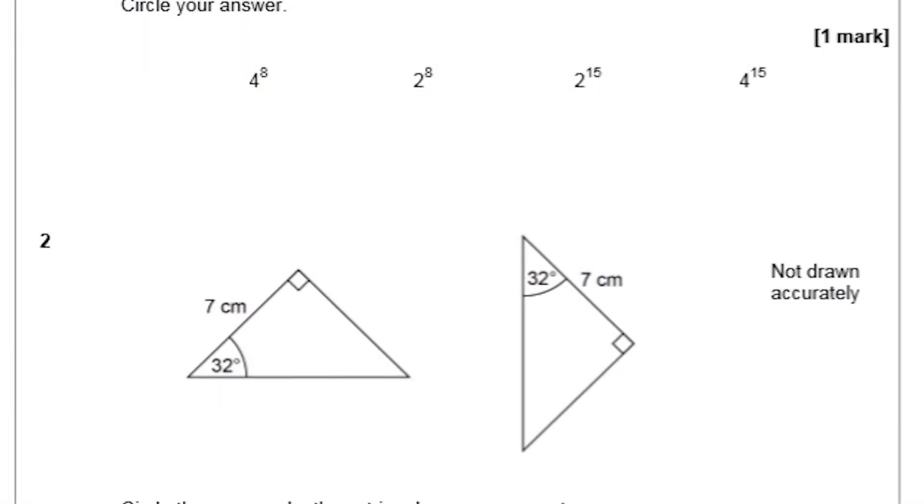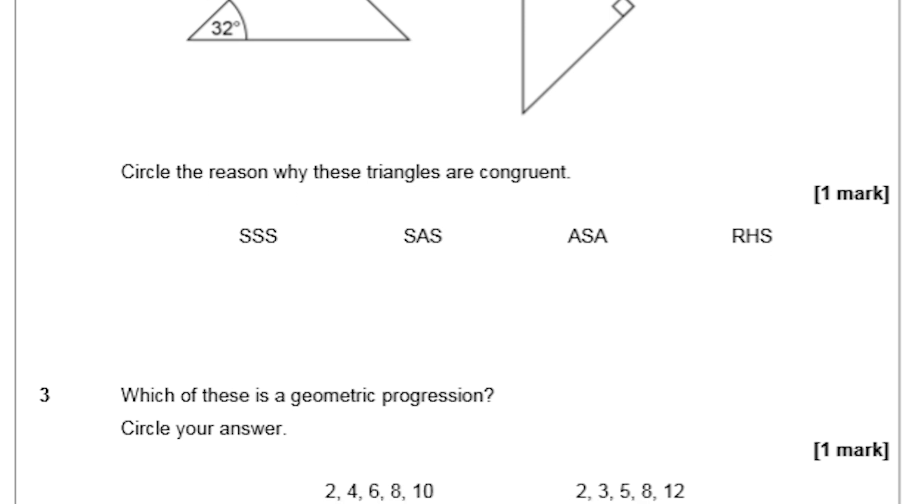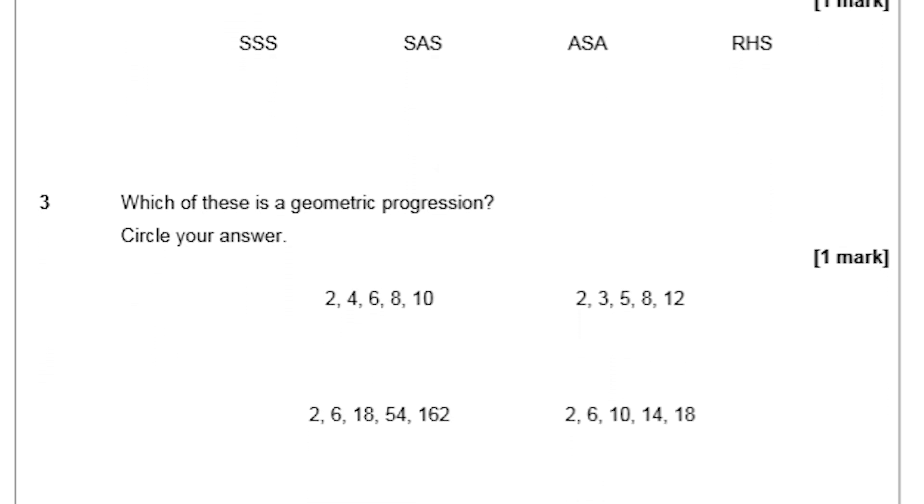The government stipulates everything that needs to be covered in the Maths GCSE, but the exam boards set the actual exams. There are three main ones in England: Edexcel, AQA, and OCR. They are slightly different but all cover the same content, so broadly speaking they're pretty similar. There are slight differences in how they phrase questions — for example, AQA often uses multiple choice questions, whereas Edexcel very rarely does. In theory, all three are equally difficult and cover the same content, and in any case, the choice of exam board will have been made by your school.